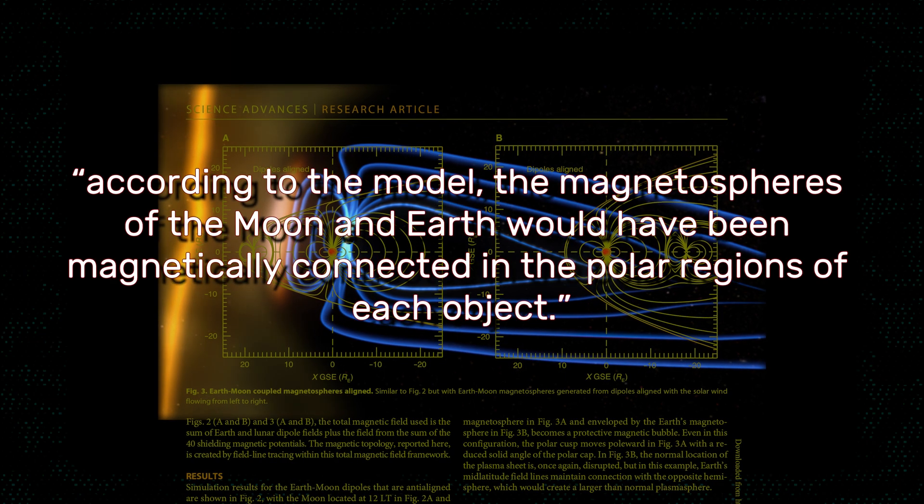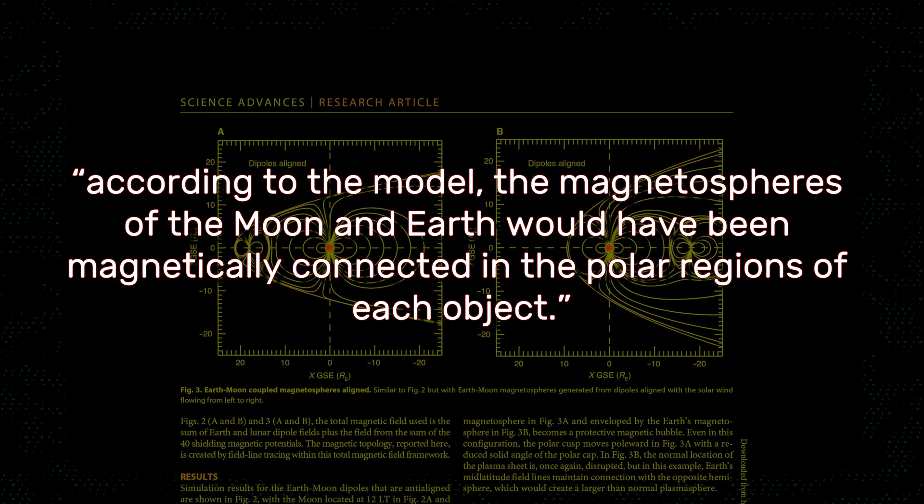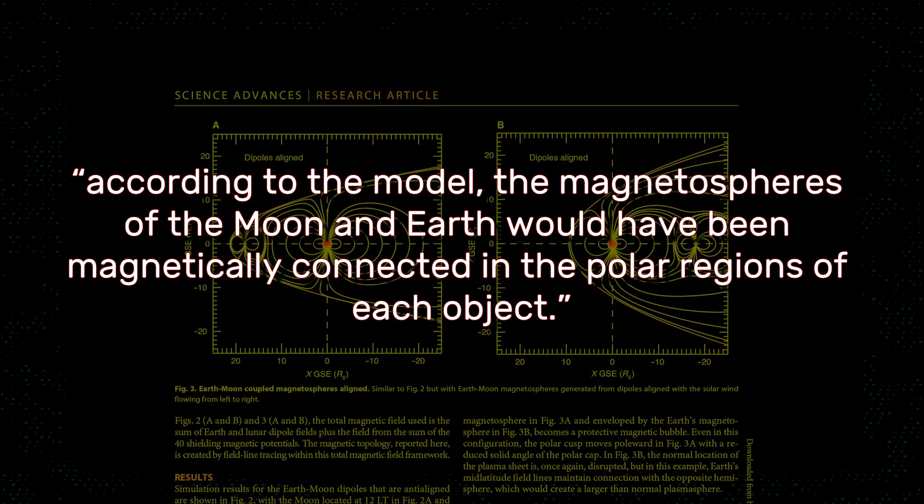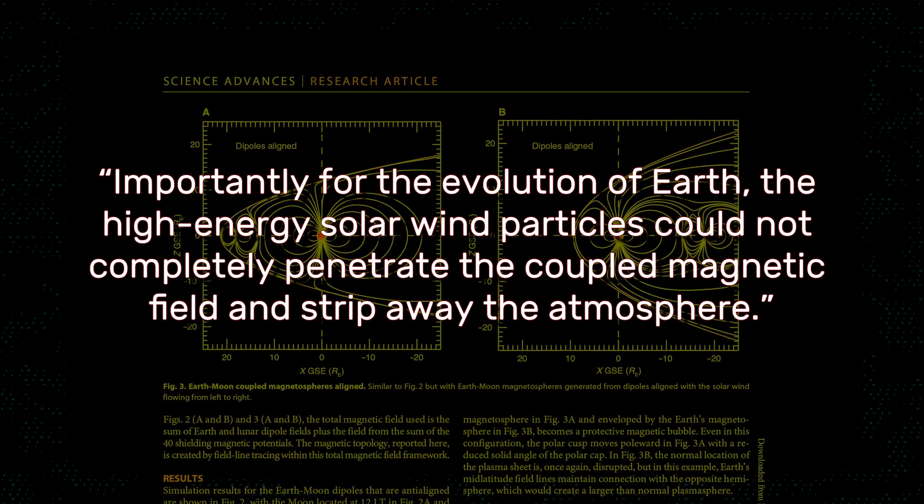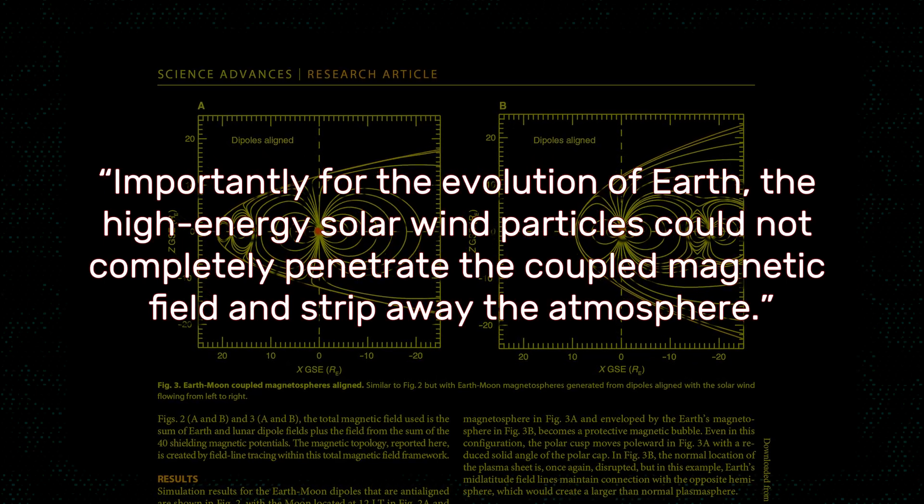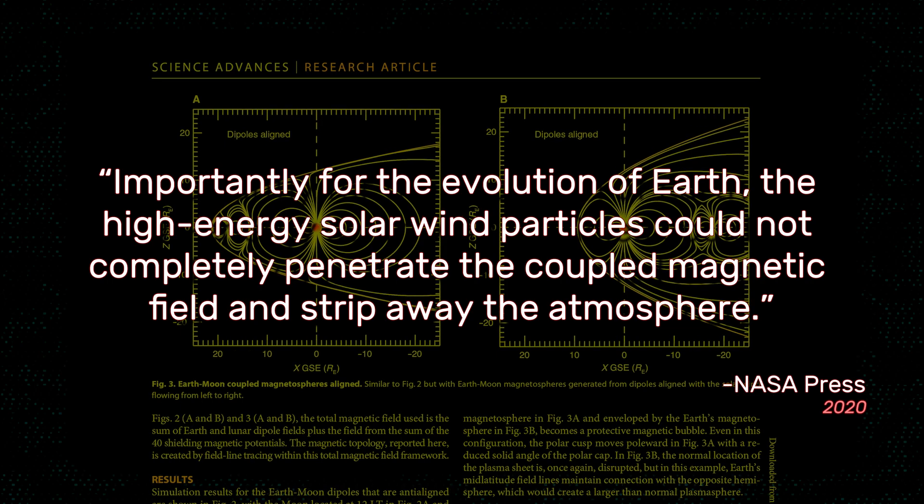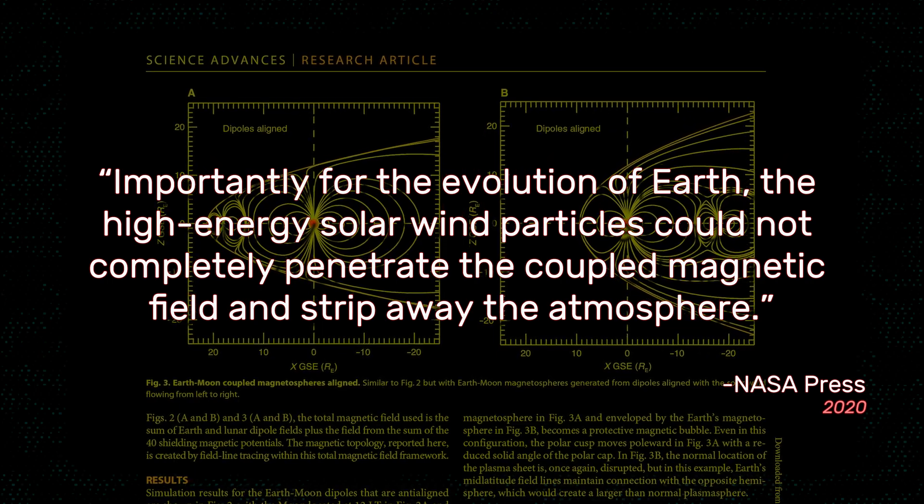Quote, according to the model, the magnetospheres of the moon and Earth would have been magnetically connected in the polar regions of each object. Importantly for the evolution of Earth, the high-energy solar wind particles could not completely penetrate the coupled magnetic field and strip away the atmosphere.